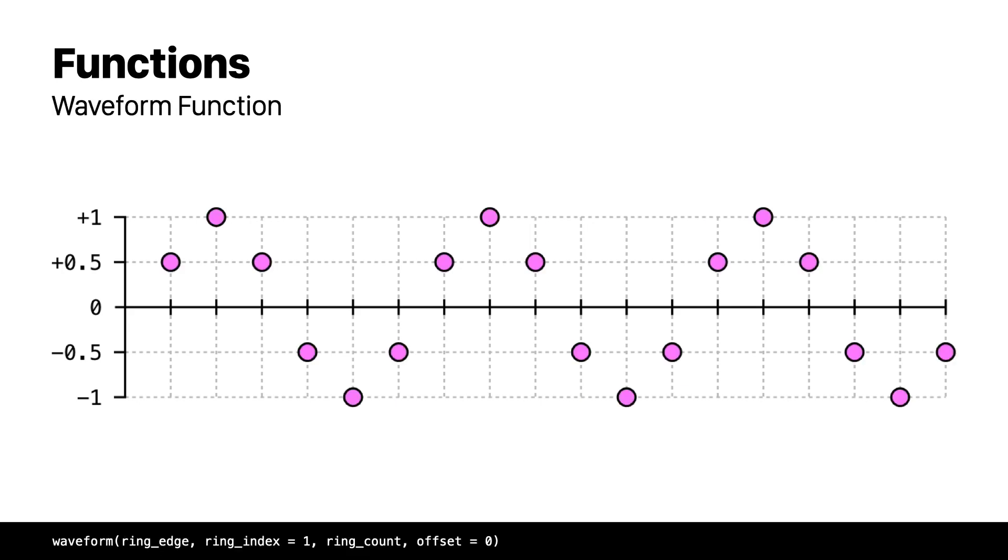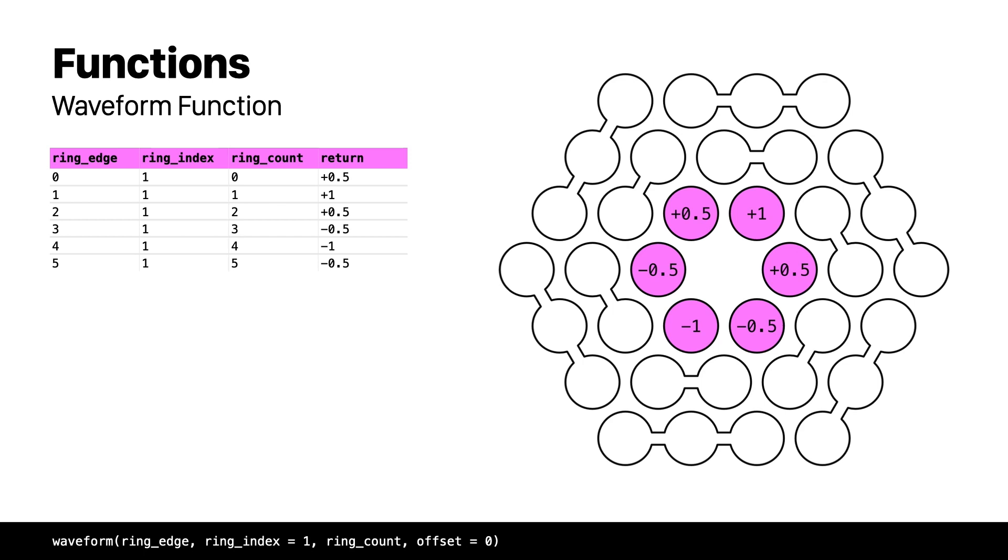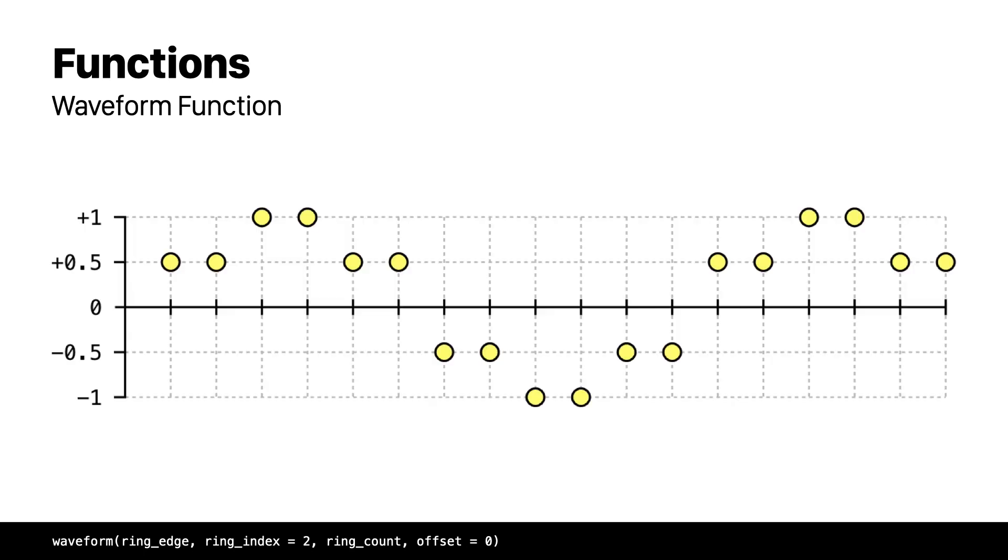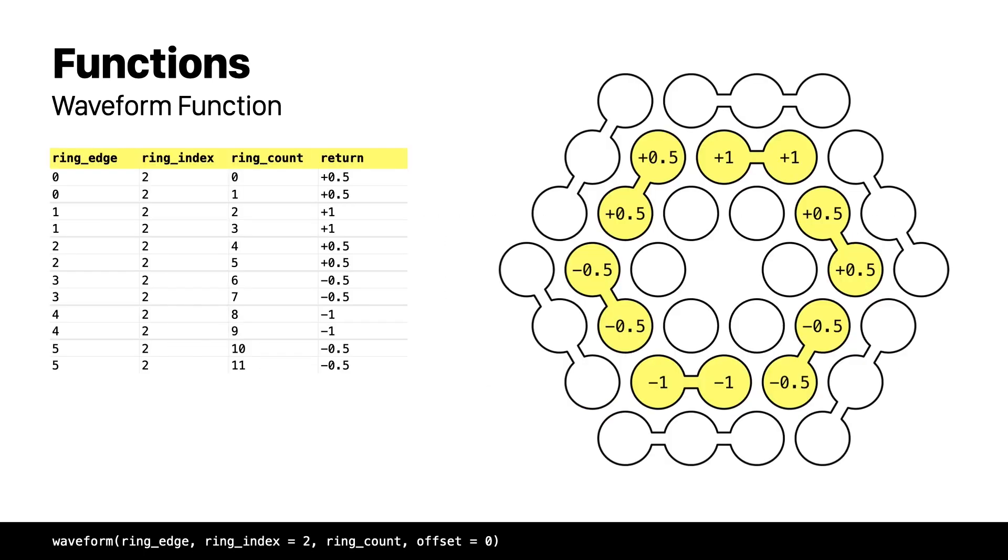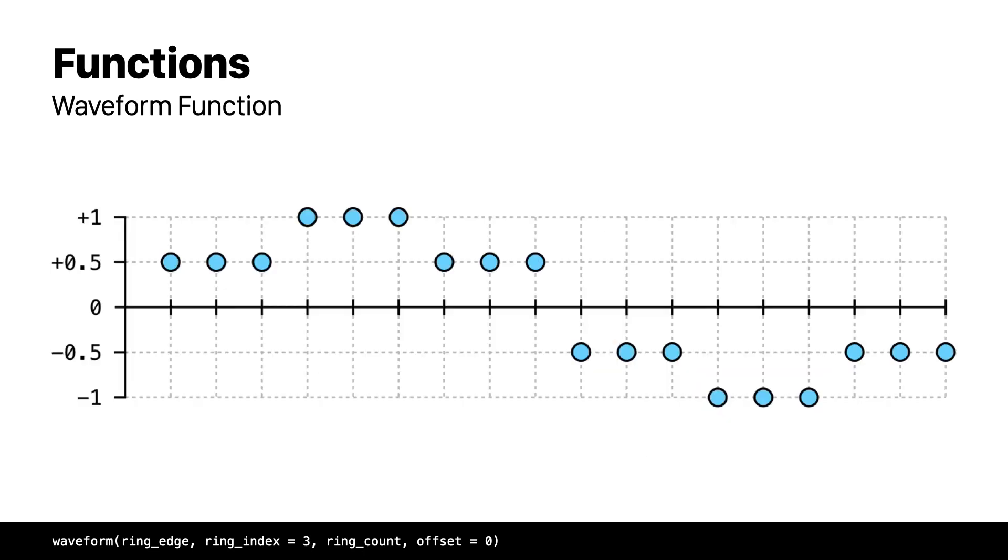The waveform function is more specific to the rings idiosyncrasy and returns values in a similar manner to a sine wave but without the zeros. This function returns values that oscillate between plus one and minus one with plus point five and minus point five added as well. This function is also ring dependent and correlates with the ring edges so we get different step repetitions for the same oscillating values. For the first ring we get one repetition, for the second we get two, and for the third ring we get three step repetitions.